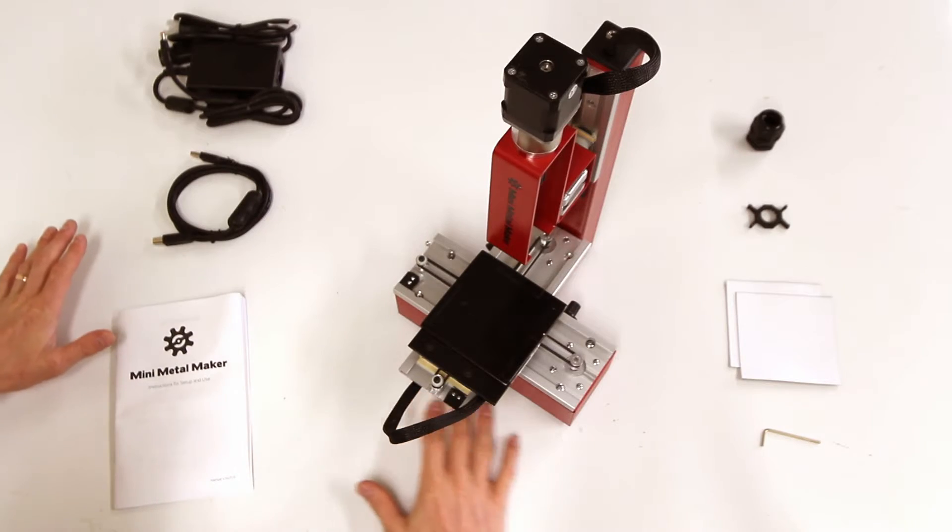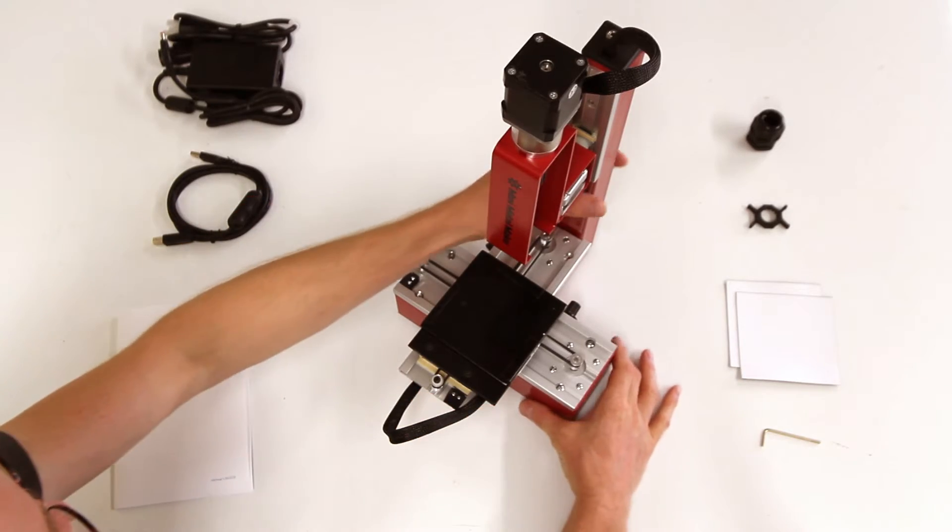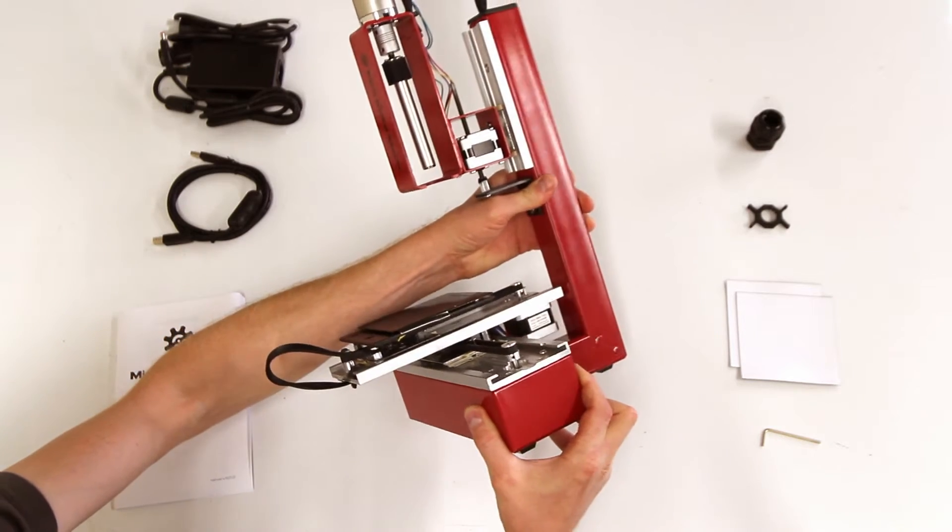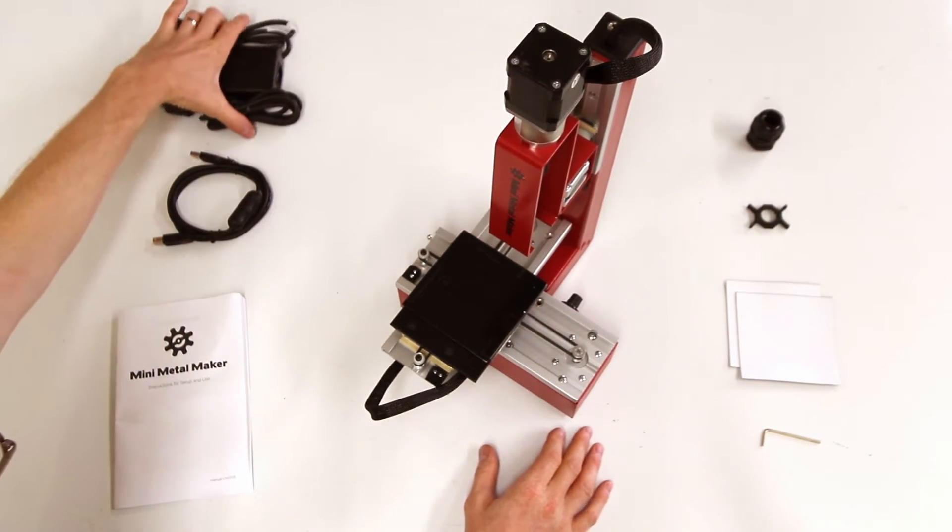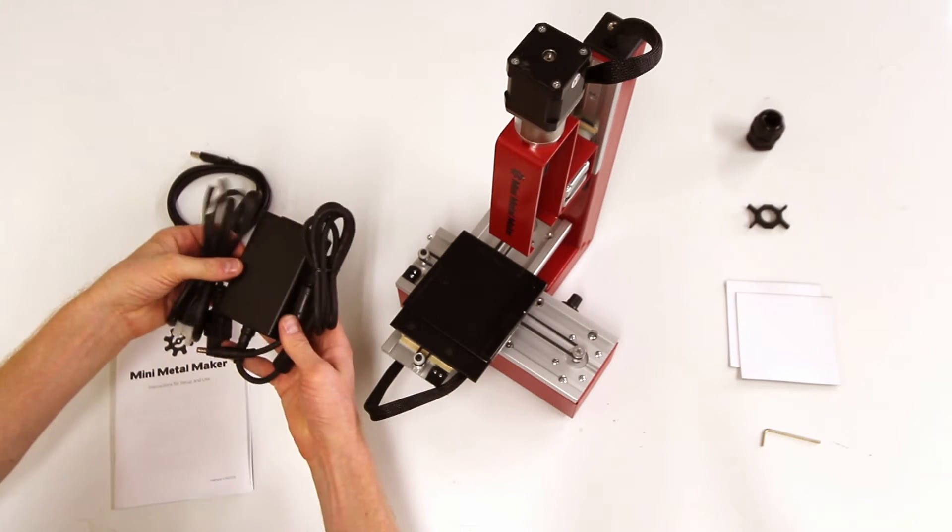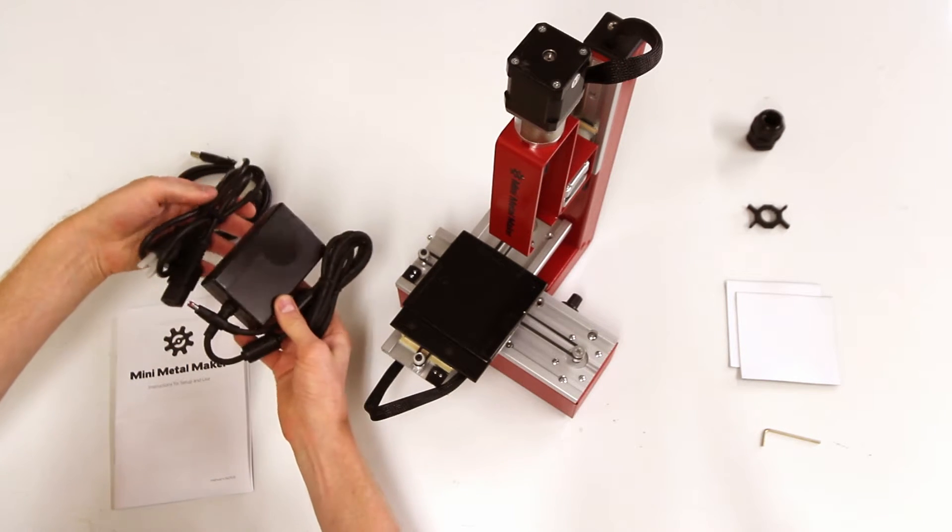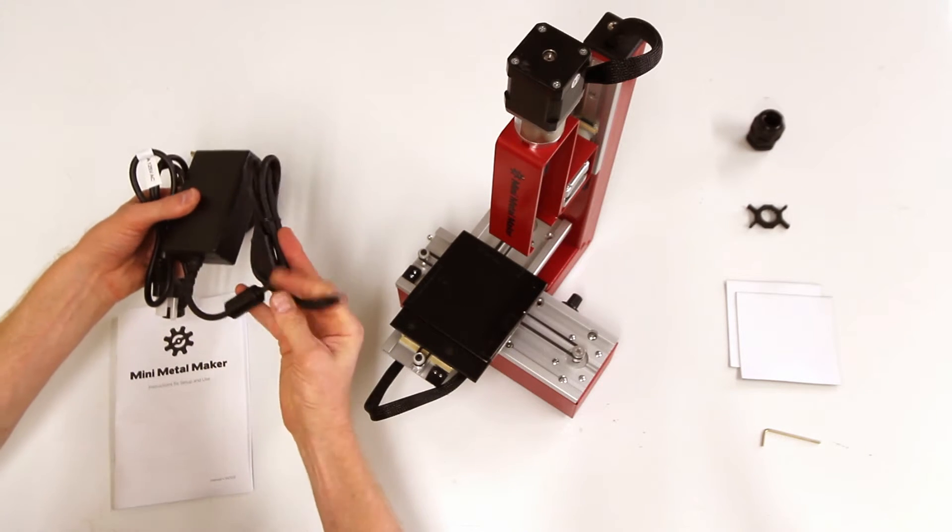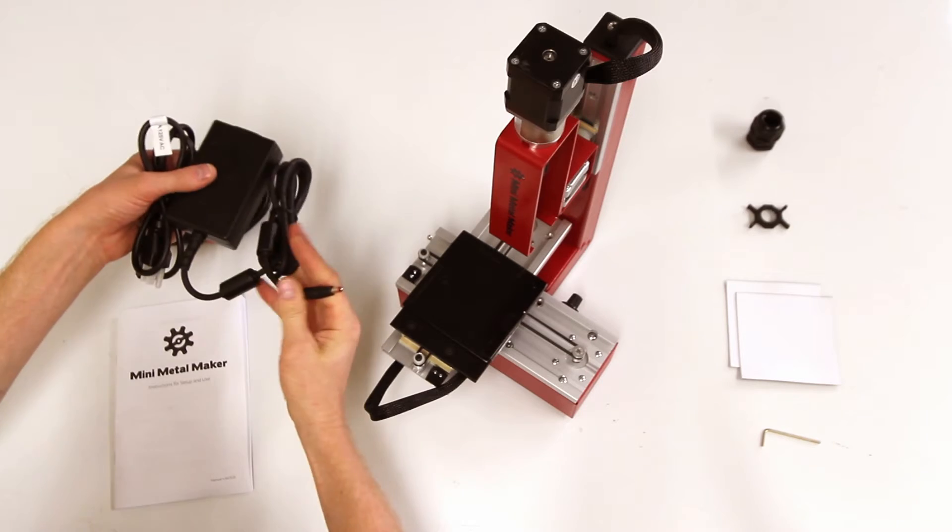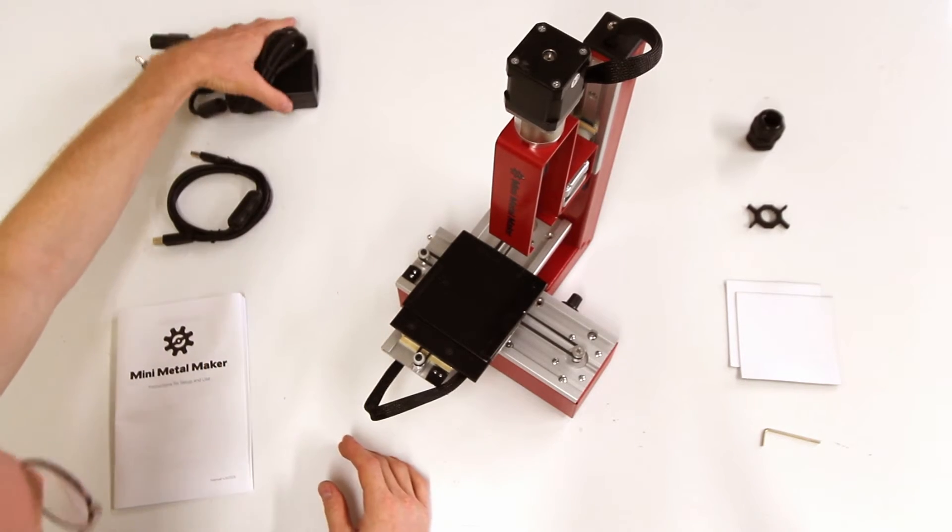So here we have everything that comes in the box with the Mini Metal Maker, including the Mini Metal Maker. So let's take a look. The first thing you should look for is the power supply. This is a 12-volt 5-amp power supply. Plug this into the wall. This is the power supply, 12-volt output there.